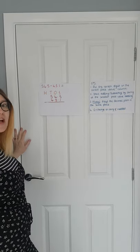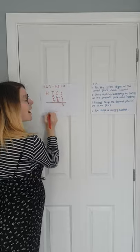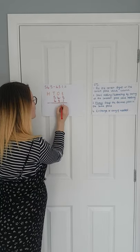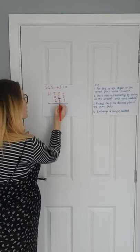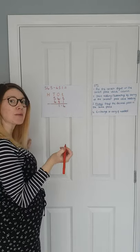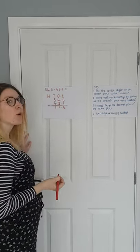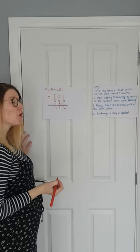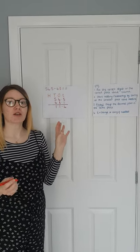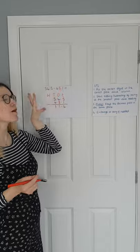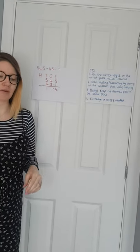Let's subtract that. Five tenths take away one tenth is four tenths. Add your decimal place in — don't forget that. Four take away three is one, and 50 take away 40 is ten. So you've got 11.4. That's how you do subtraction, so make sure you remember you're taking away your smallest number from your biggest number. Don't swap those numbers around.